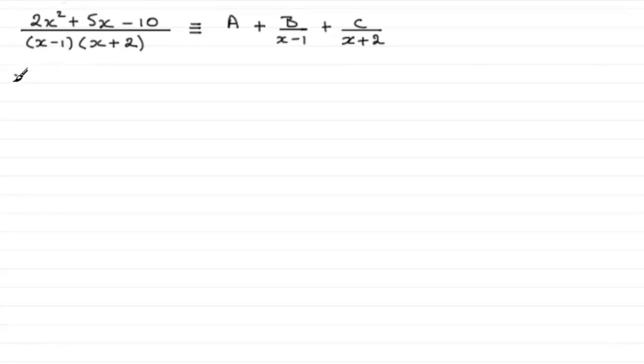So first of all, if we do multiply both sides by x minus 1 times x plus 2, we're going to get on the left 2x squared plus 5x minus 10.